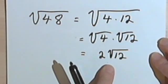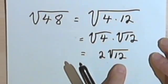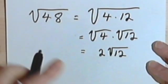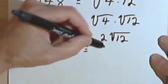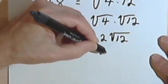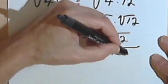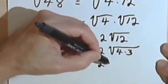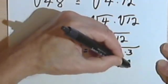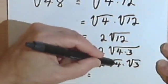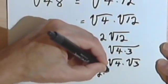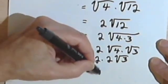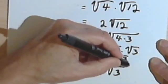Now, before I can decide that I'm done, I've got to ask myself: could I simplify the 12 any more? In other words, is there a factor of 12 which is a perfect square? And in fact there is — 12 is 4 times 3. So I can rewrite this once again as 2 times the square root of 4 times 3, making two separate radical signs: 2 times the square root of 4 times the square root of 3. The square root of 4 is 2, so I've got 2 times 2 times the square root of 3. Multiply 2 times 2 and I'll end up with 4 times the square root of 3.